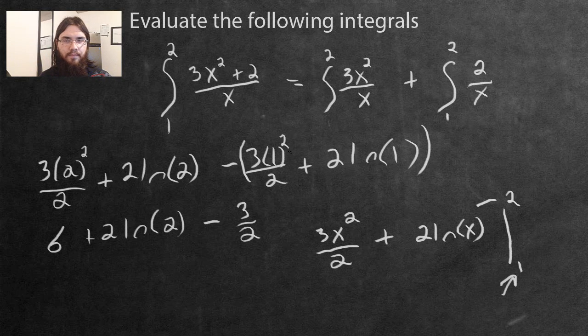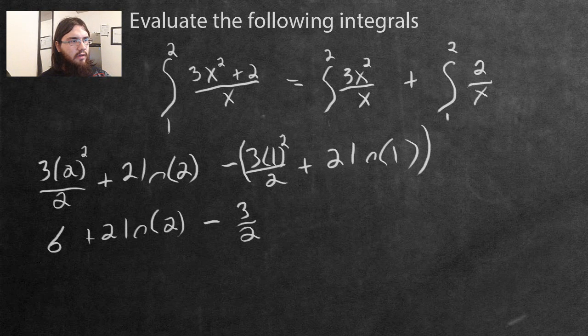Now the natural log of one is just going to be zero, so if you multiply two by it, it's still going to be zero. Therefore, I'm not even going to write this one there. It's just zero. And now that we have all of this, it's just a matter of simplifying it.